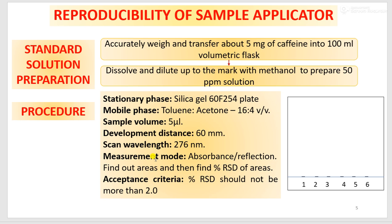This 50 ppm solution of caffeine will be applied in the form of different bands. The volume applied for each band will be 5 µL. Once the application is done, you have to develop the plate using this mobile phase. After development, the plate will be scanned — all six tracks will be scanned and area for each track will be measured. The acceptance criteria: percentage RSD of the area for all six tracks should not be more than 2%.